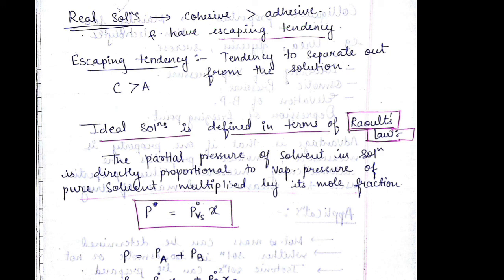What is escaping tendency? Escaping tendency is the tendency to separate out from the solution. Cohesive force should be greater than adhesive force. Solution is defined in terms of Raoult's law. It states that the partial pressure of solvent in solution is directly proportional to vapor pressure of pure solvent multiplied by its mole fraction.